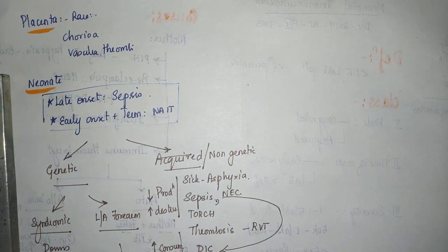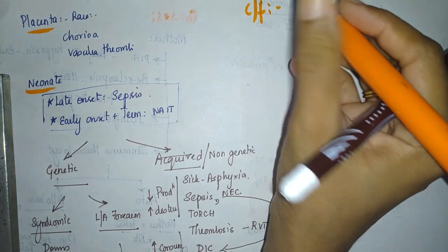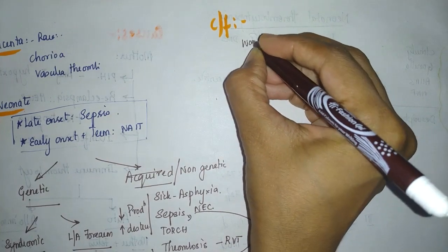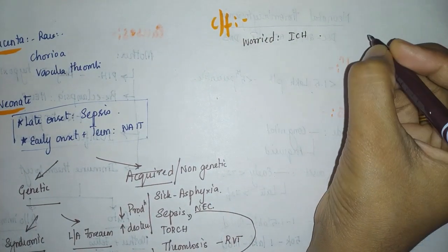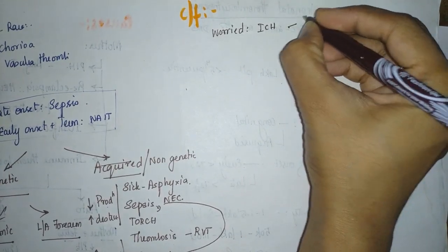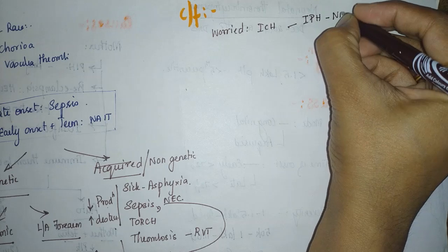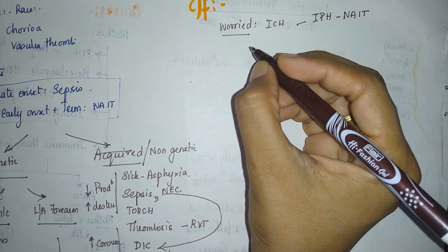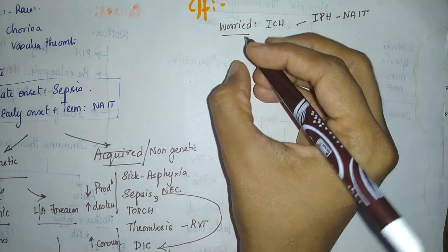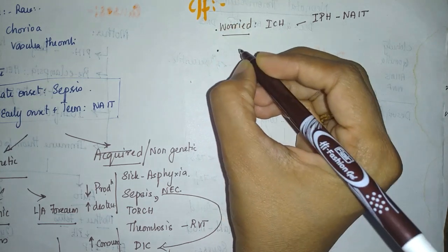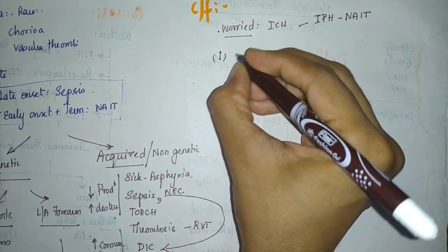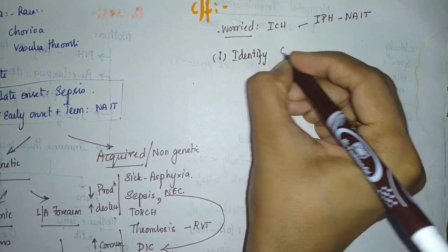Now that you know the causes, you will evaluate the child. What are the clinical features you will be looking out for? The usual presentations of thrombocytopenia will apply here also. What you are worried about most is intracranial hemorrhage. Intraparenchymal hemorrhage is especially associated with neonatal alloimmune thrombocytopenia, so you need to watch out for that.